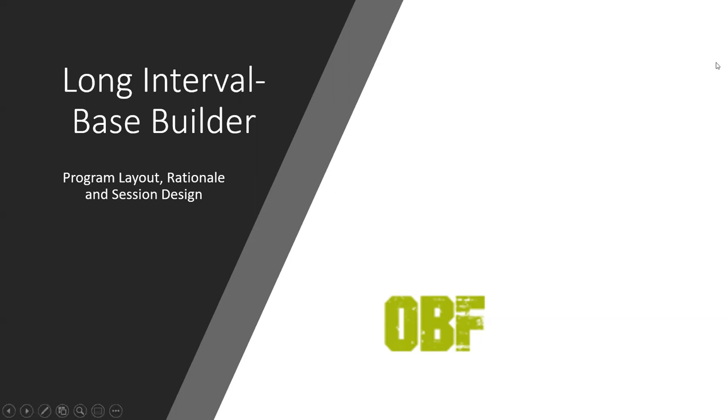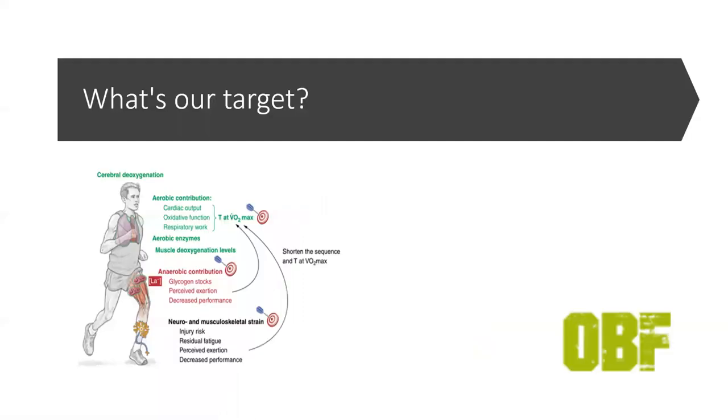This should answer a lot of questions for you and shine a light on any issues when reading the program. Fundamentally we need to ask ourselves what to be targeting. We have three systems we can target: aerobic, anaerobic, and neuro and musculoskeletal strain. The target of this running block is aerobic and anaerobic contribution.